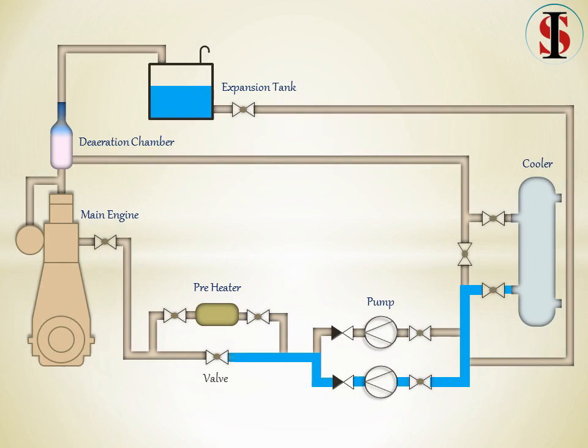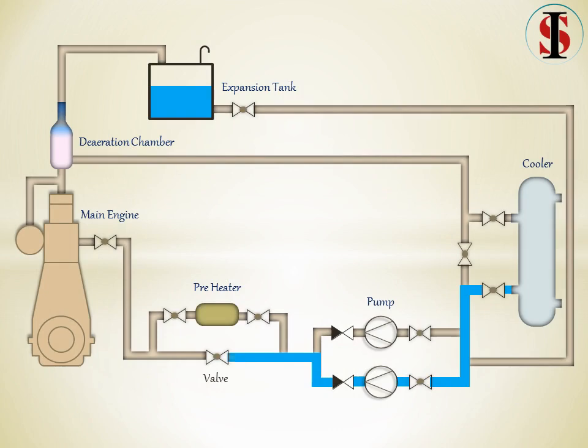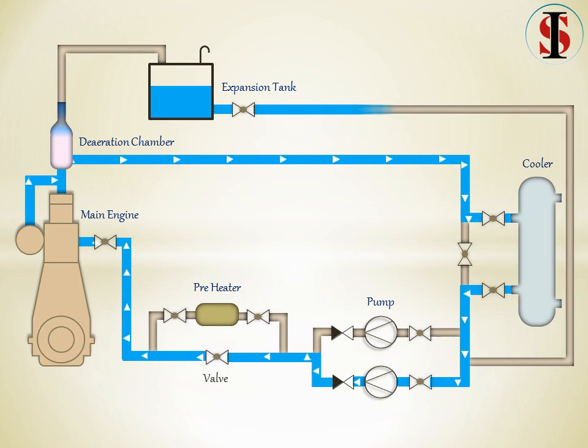The jacket cooling system is a closed circuit. Water passing from the engine returns through a cooler to the circulating pump and then back to the engine while the engine is running. A header or expansion tank is placed at sufficient height to allow venting and water makeup in the system.